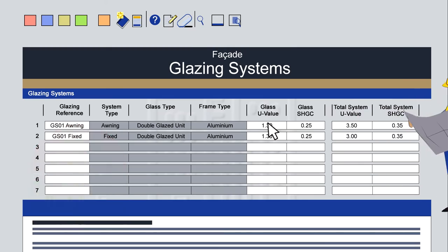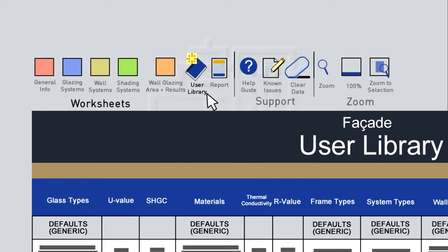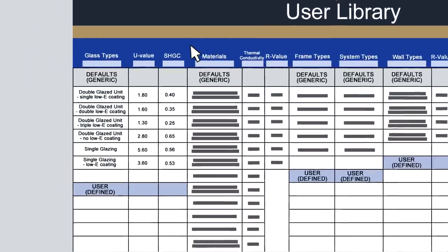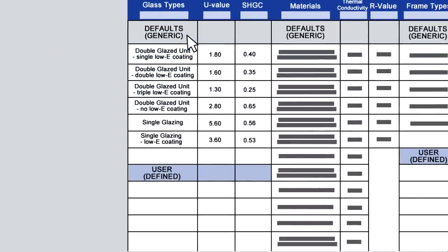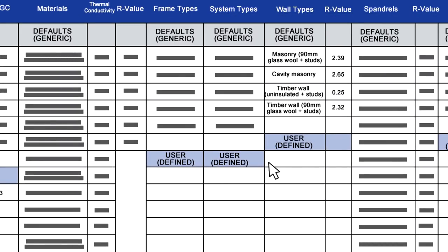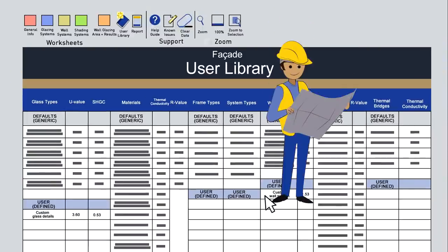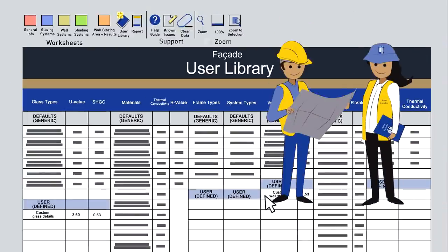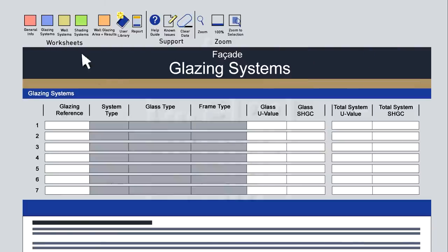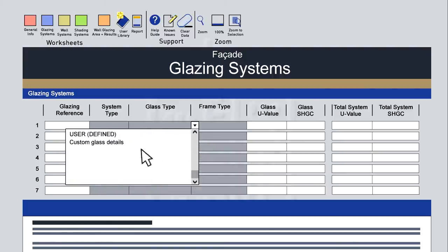One important aspect of the calculator is the inclusion of a customisable user library. While some generic values are pre-entered, the calculator is designed to be expanded upon over time. You can build your own library of values as you use the calculator. These values may be for individual facade elements or entire wall systems. Some data will be known to you and some will need to be sourced from suppliers. All user-defined items in the library will automatically be added to the relevant drop-down menu in the calculator.